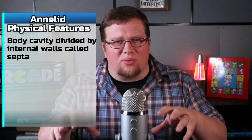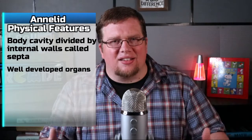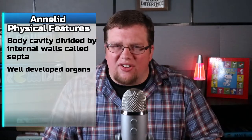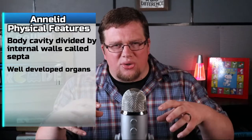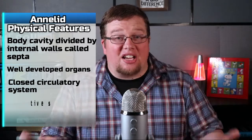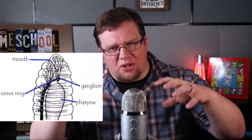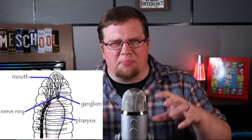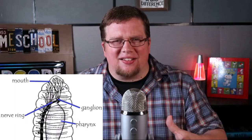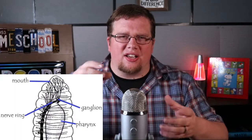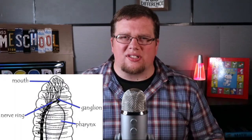Annelids also have a body cavity which is often divided by internal walls called septa. The internal organs of annelids are well developed, including a closed circulatory system, a digestive system, and a nervous system. This nervous system includes a simple brain called a ganglion, and it has a nerve ring and a nerve cord inside of it.